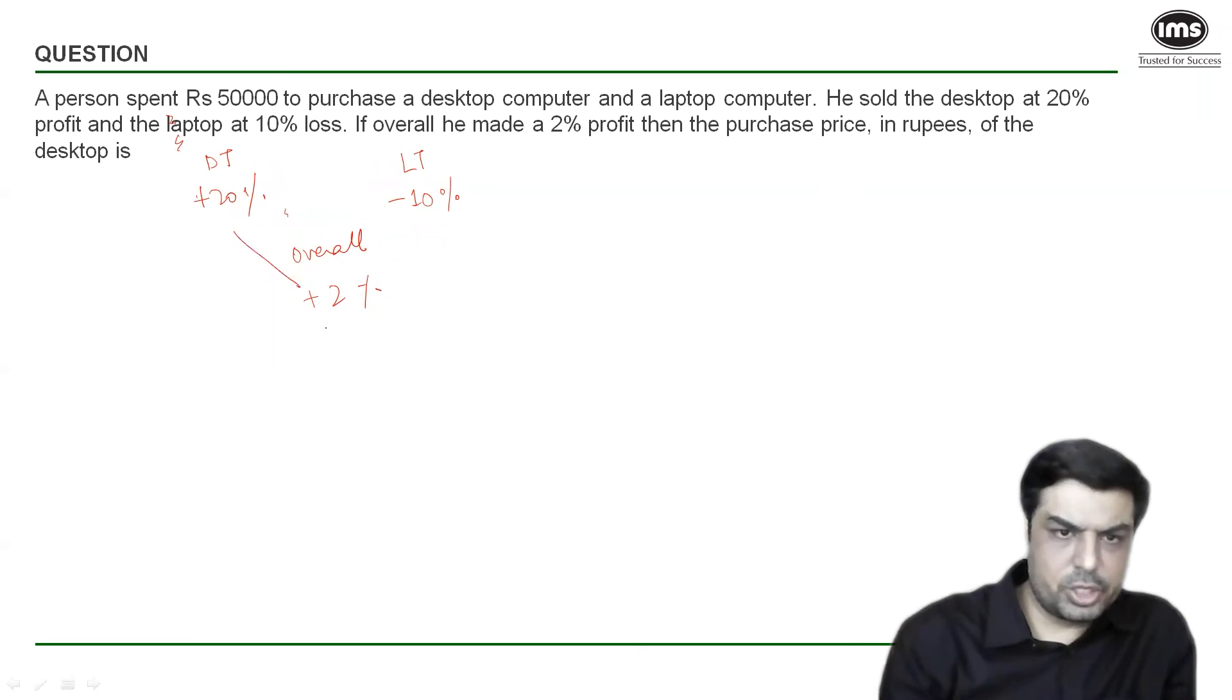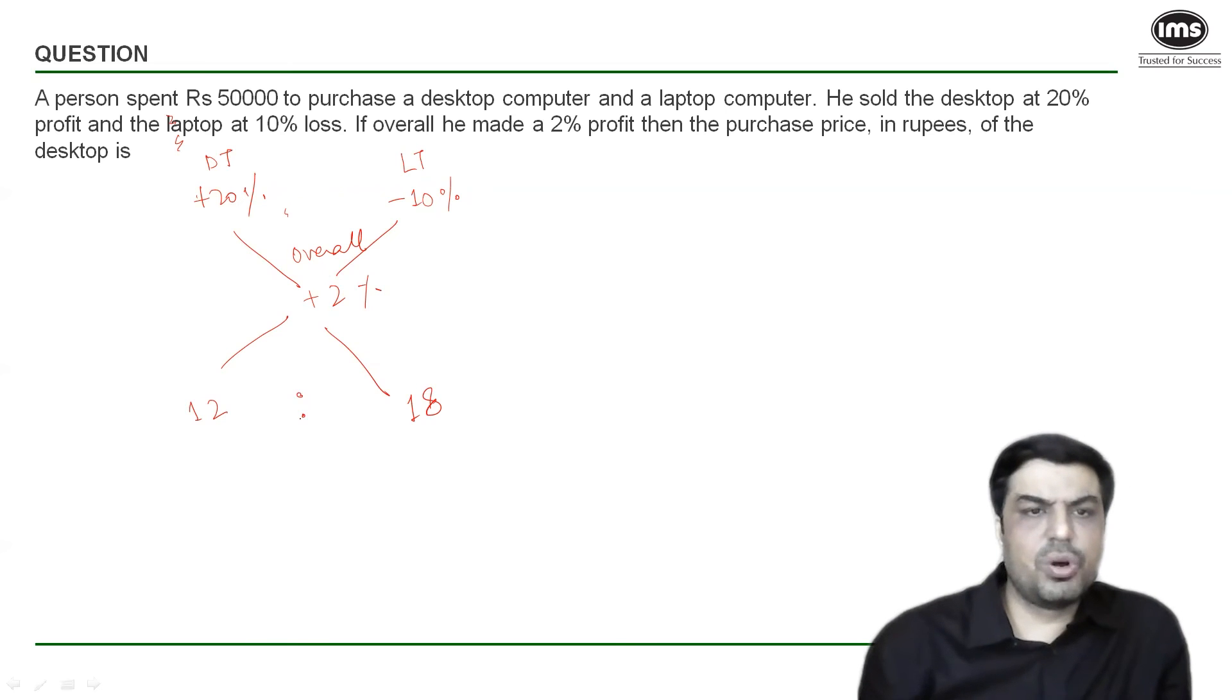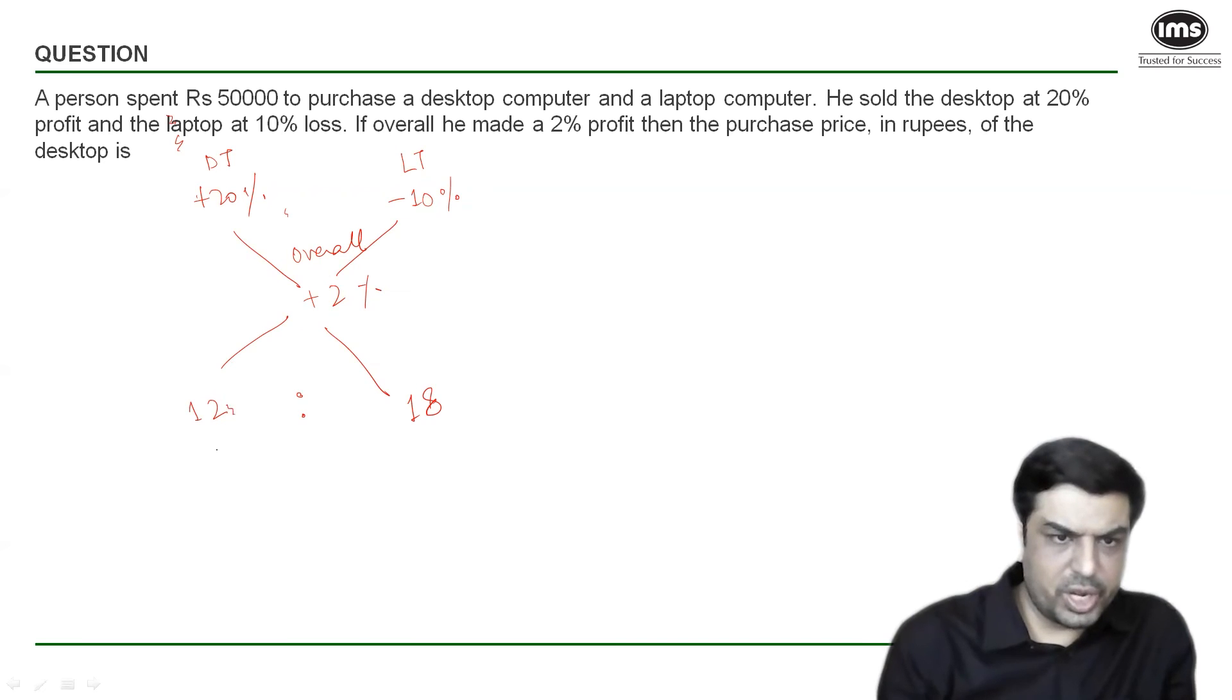Let us subtract. 20 minus 2 is 18, and 2 minus minus 10, so when you do minus minus 10 it will become 2 plus 10, that is 12. Which means, profit percentage is calculated on the cost price. So 12 is to 18 is the ratio of cost price of the desktop and the laptop. Simplest ratio of 12 is to 18 is nothing but 2 is to 3. 2 is to 3 means we've got a total of 5 parts.